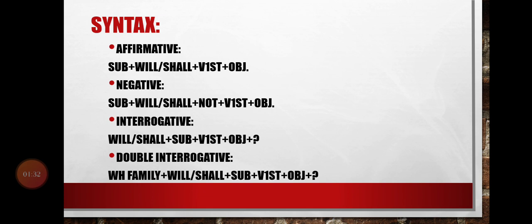Here is the syntax. In the affirmative, the structure is: Subject + will/shall + first form of verb + object. In Future Indefinite we only use the first form of the verb — never the second or third. For negative, we add 'not.' For interrogative, we start with will/shall, then subject, then first form plus object and a question mark. For double interrogative, the WH family word comes first, then will/shall, then subject, first form, object, and question mark.